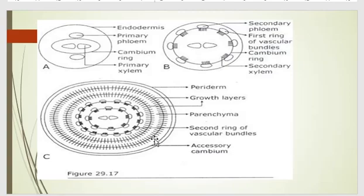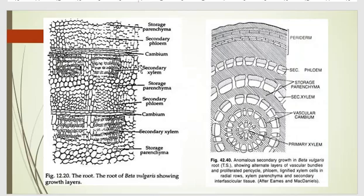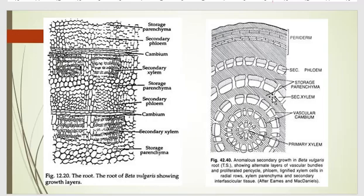In this transverse section of Beta vulgaris, the growth layers are shown: storage parenchyma, then secondary phloem, then cambium in between, then secondary xylem, then again storage parenchyma, secondary phloem, and cambium. The figure shows alternate layers of vascular bundles with proliferated pericycle, phloem, and lignified cells in radial rows. The vascular bundles are developed and between them storage layers are also developed according to the cambium.